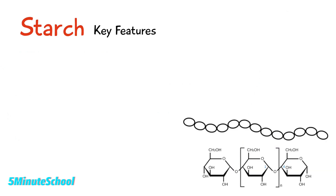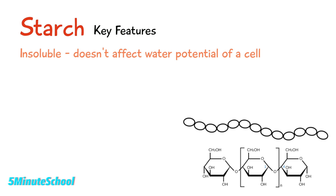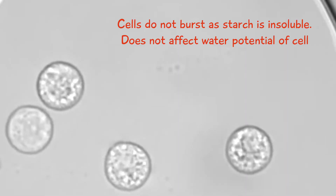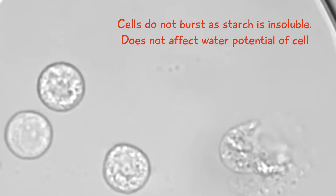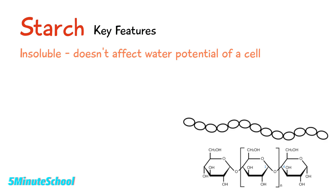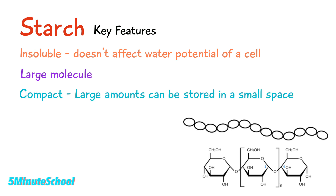Starch has a key role in energy storage. The features of starch are that it's insoluble, so it doesn't affect the water potential of a cell, and that means it doesn't cause water to draw into the cell by osmosis. It's large and insoluble so it doesn't diffuse out of cells, and it's compact so high amounts can be stored in a small space.